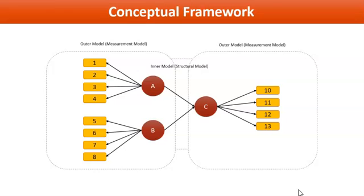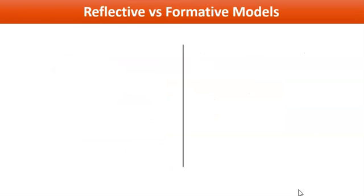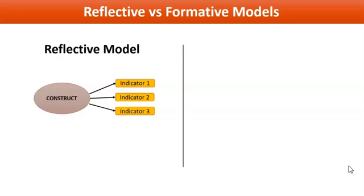There are two different types of models: reflective and formative. In a reflective model, indicators are highly correlated and they are interchangeable. The importance of reliability and validity increases. You will see that arrows are moving from construct to indicators. Changes in the latent variable directly cause changes in the assigned indicators.